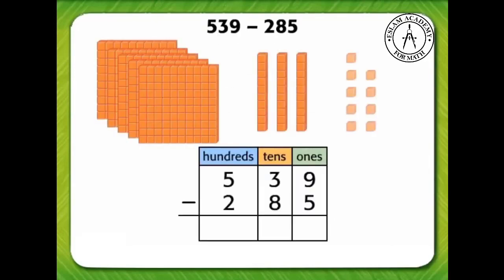First, we subtract the ones. There are nine ones in 539. We need to subtract five ones: one, two, three, four, five. That leaves four ones. Write four in the ones column on the place value chart.